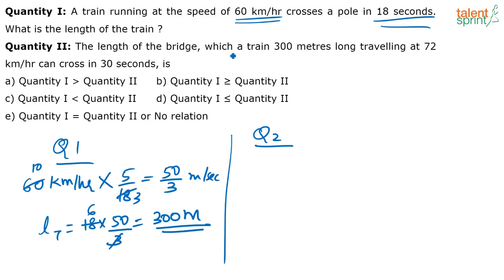Now look at quantity 2. The length of a bridge which the 300 meter long train traveling at 72 kilometers per hour can cross in 30 seconds is dash.